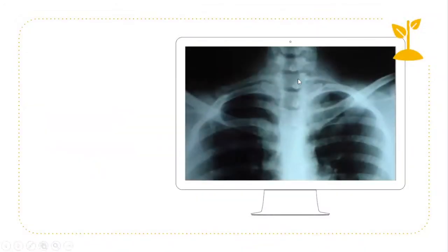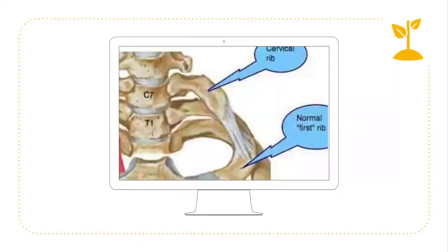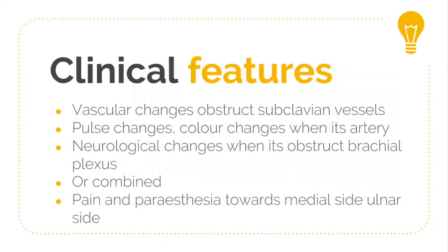On X-ray cervical spine AP view, you can see elongation of the seventh cervical transverse process, which causes occlusion to this particular area. Whenever it is bony, we can diagnose it on X-ray, but when it is fibrous, we need to rely on clinical examination. This elongation of the transverse process of C7 is what causes occlusion in this area.